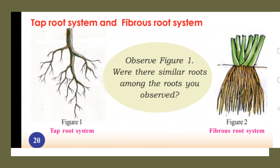Look at the picture. What can you see from these two pictures? Two types of root systems. One is called the tap root system, which has a larger root with smaller branches. The other shows similar roots — that is the fibrous root system.